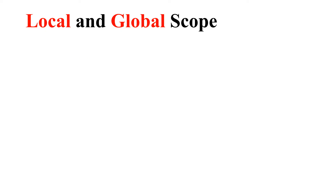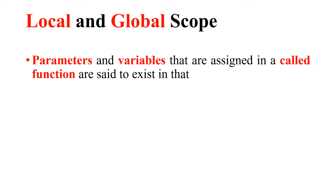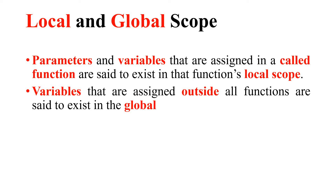First, parameters and variables that are assigned in a called function are said to exist in that function's local scope. Similarly, variables that are assigned outside all functions are said to exist in the global scope.